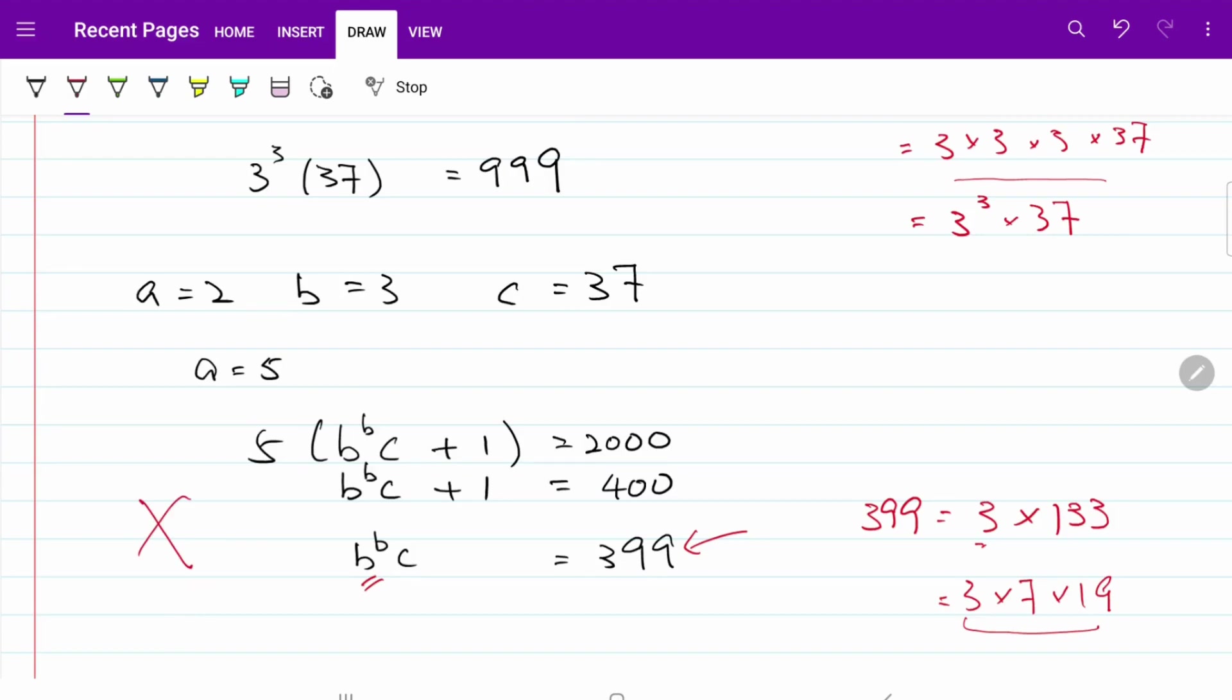meaning ultimately the answer that we have for a plus b plus c is equal to 2 plus 3 plus 37, which is equal to 42. That will be the final answer for today's question.